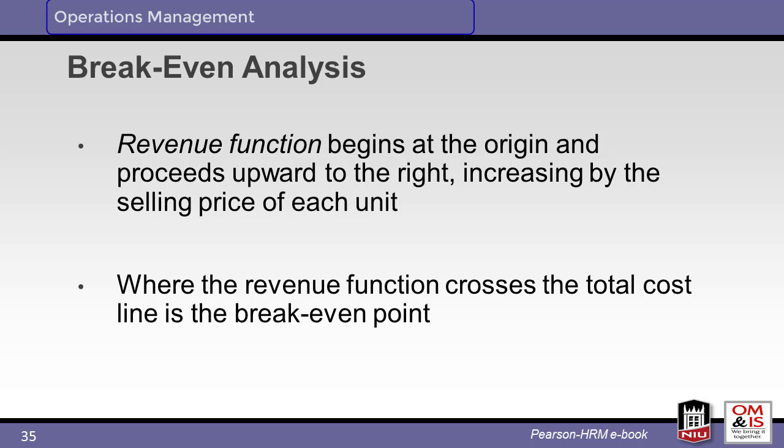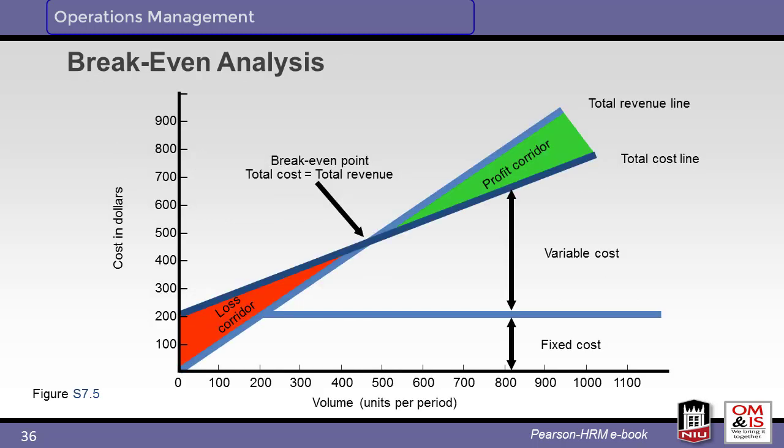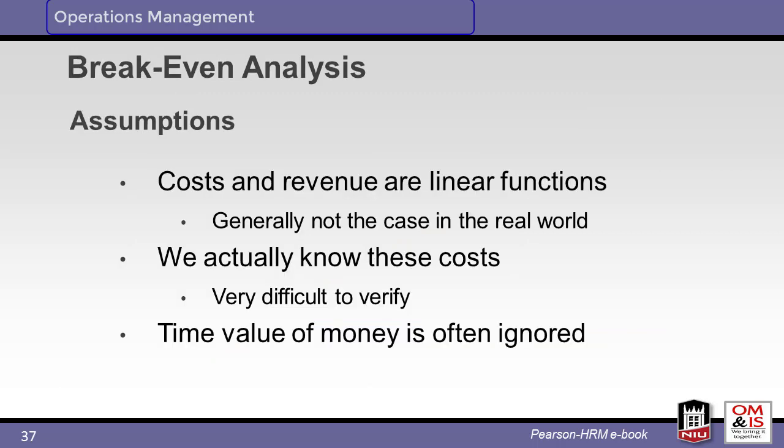The line representing revenues starts at the origin and proceeds upward with a slope equal to the selling price of each unit. The breakeven point is where the revenue and cost lines cross. This graph shows the results of the breakeven analysis — notice revenue, fixed cost, and variable cost. At unit volumes to the left of the breakeven point we are losing money; to the right, we are profitable. Note that this analysis assumes cost and revenue are linear functions that can be accurately estimated, and that the time value of money is ignored — money available today is more valuable than money available in the future.